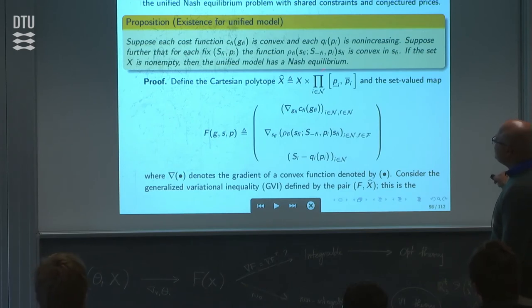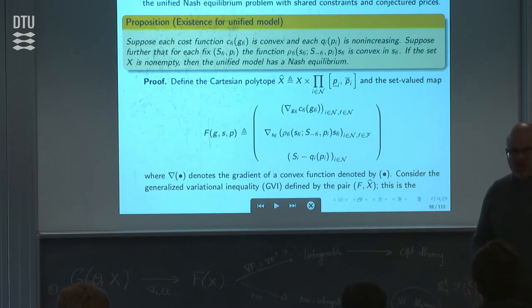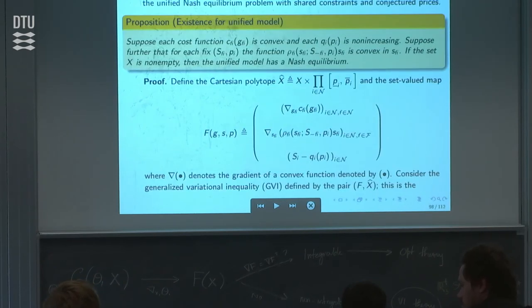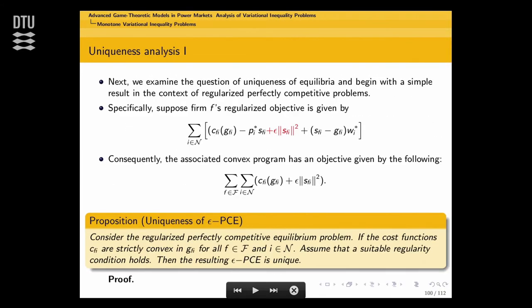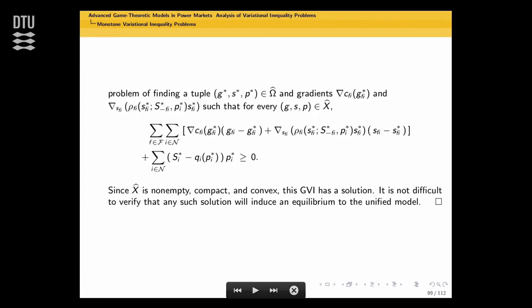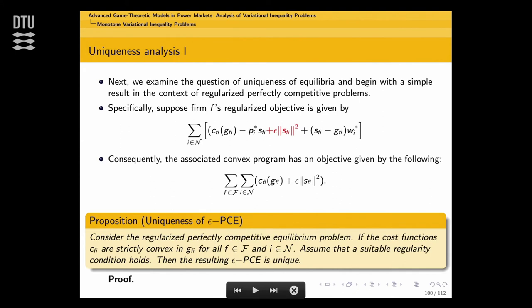There are other models besides perfectly competitive and Nash-Cournot—for instance, conjectured supply functions, which is beyond the scope of this class. Our goal in doing this work is to develop a framework which works for everything—a model to rule all models. For uniqueness, all I did was write down the VI. The uniqueness analysis is still problematic—we don't have a complete answer. We have two avenues.